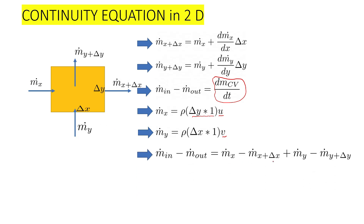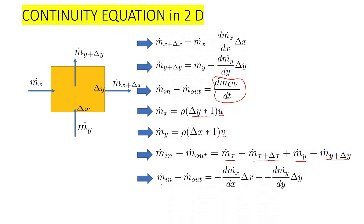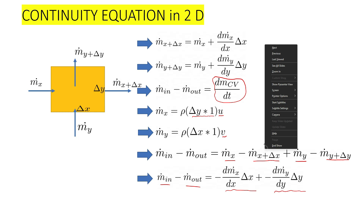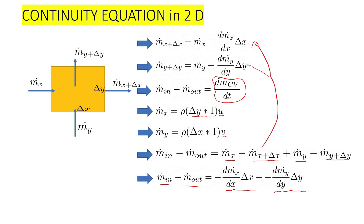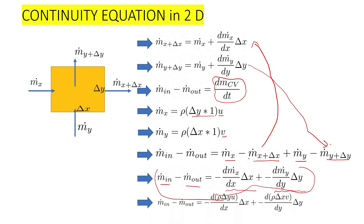Mass in minus mass out equals ṁ_x minus ṁ_{x+δx} plus ṁ_y minus ṁ_{y+δy}. This gives minus (dṁ_x/dx)·δx minus (dṁ_y/dy)·δy. Substituting ṁ_x as rho·δy·u and ṁ_y as rho·δx·v into this expression gives the net mass flux terms.